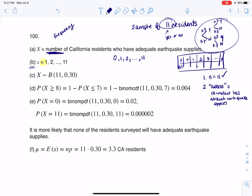And then are these trials independent? Well, if I'm going to talk to a random sample, these trials are going to be independent. I'm not going to assume that just because one person has adequate supplies, that has any effect on whether the next person will have adequate earthquake supplies. And they told me my success rate is about 30%. So since I can put check marks by all four of these, I get to write my squiggles.